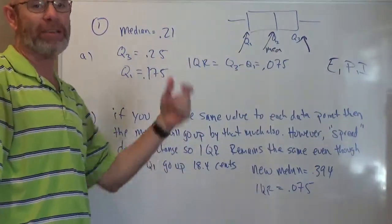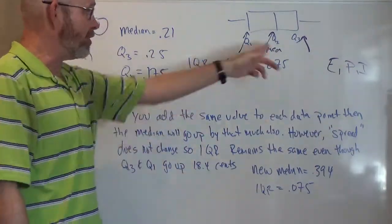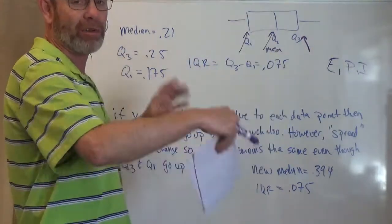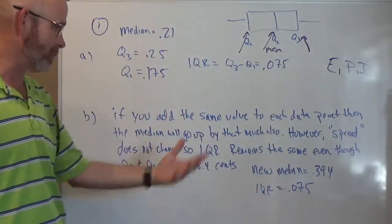So you change the mean, you change the median, you change the quartiles, but you don't change anything that has to do with spread. So you don't change the range, you don't change the interquartile range. That's my explanation here.